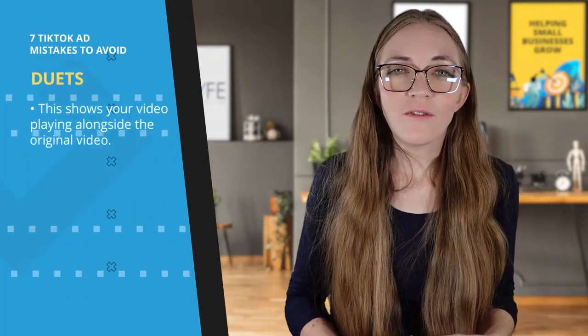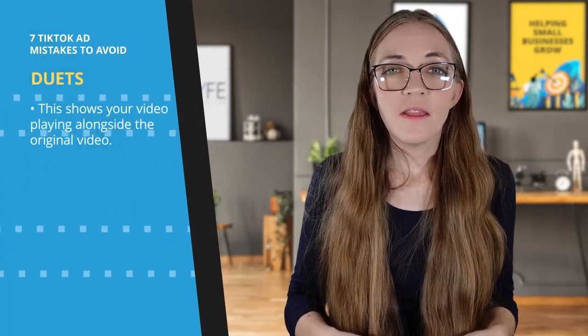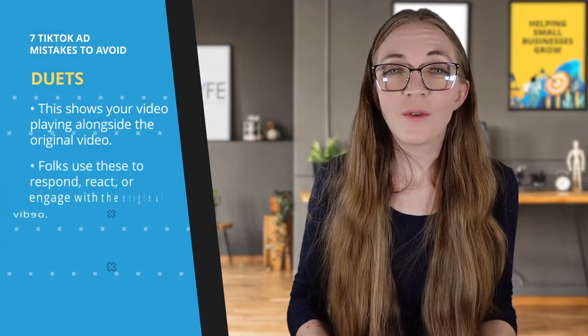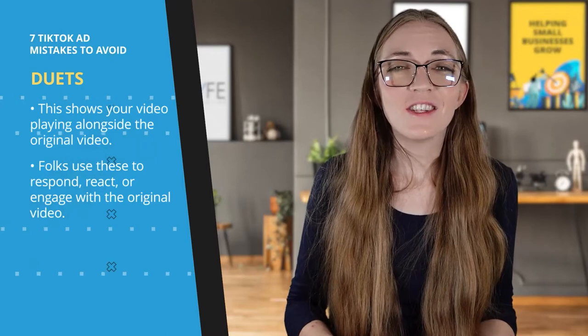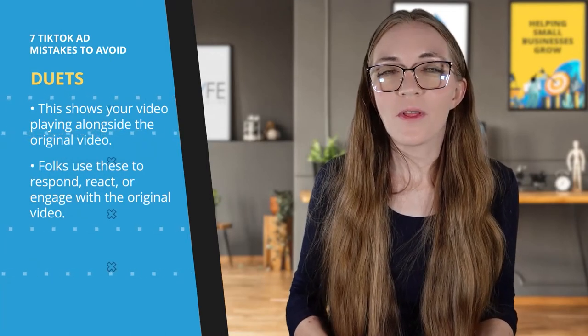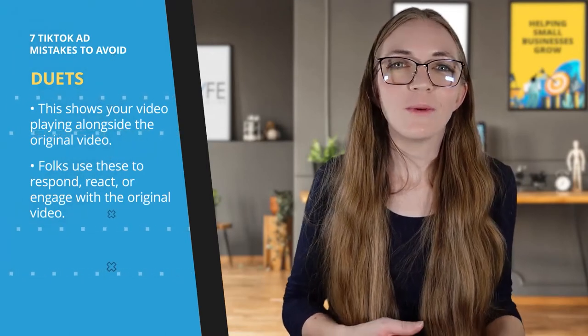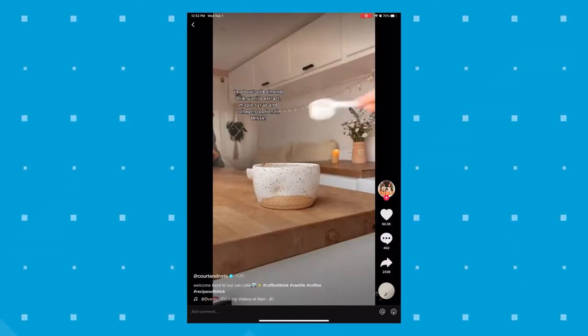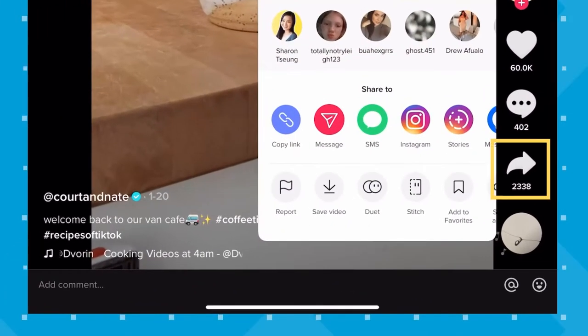One way that users can interact with your video is by doing duets. This shows the user's video next to your original video. I've seen folks use these to respond, react, or engage with the original video — like doing a skit with it. If you want to duet someone's video, you tap the share arrow. If you don't have the option, that creator does not allow duets, which can be turned on or off in settings. A lot of folks will still duet by screen recording the video and posting it on top of theirs.